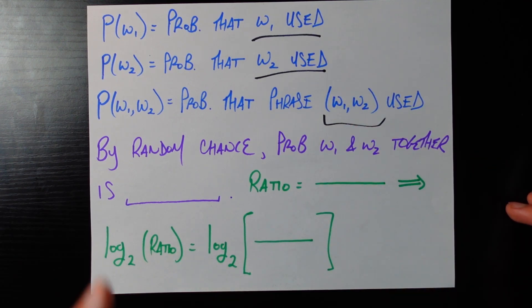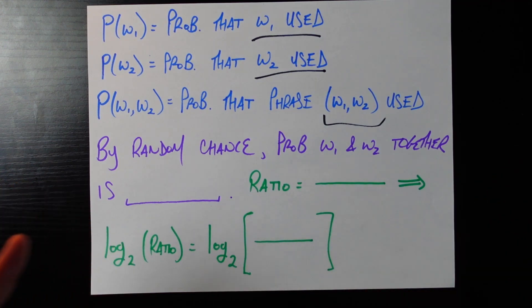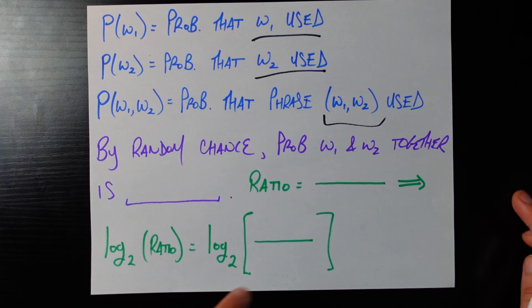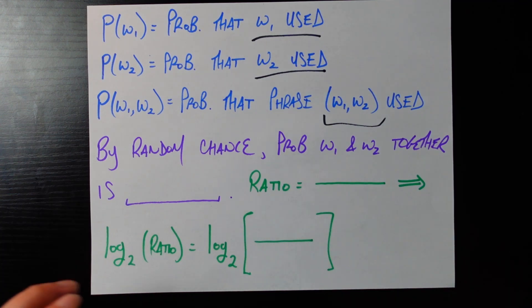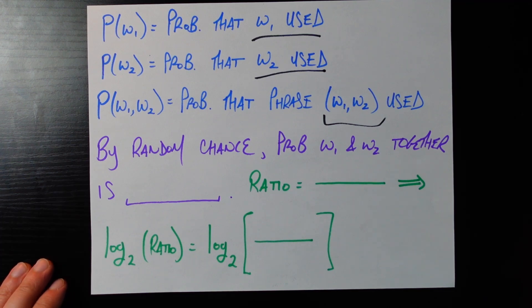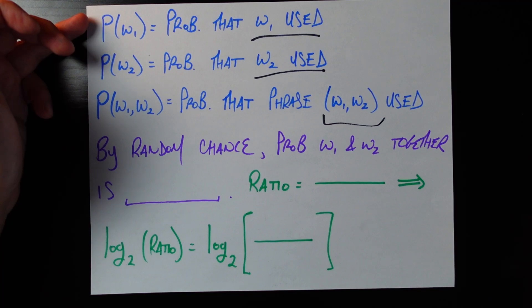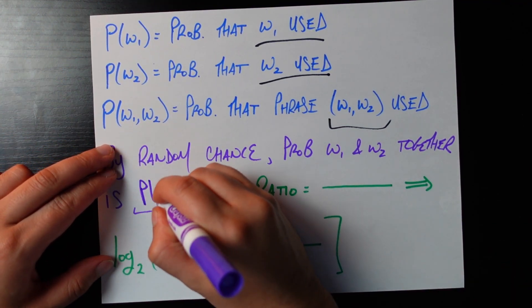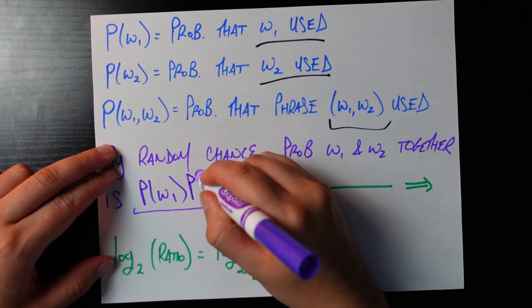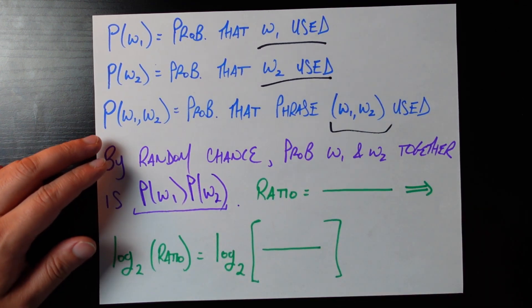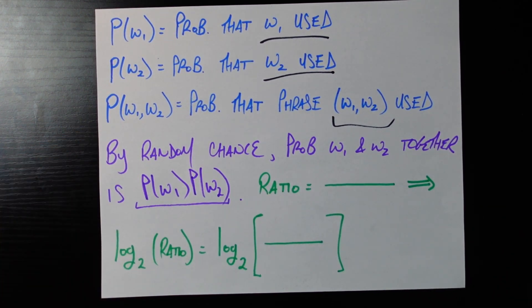Now by random chance what's the probability that in this massive piece of text or in all these books we're using what's the probability we would see w1 and w2 together by random chance. By random chance purely or in other words if we didn't have any reason to believe that w1 w2 was a phrase of any kind the probability we would observe them together in a bigram is simply just going to be p w1 times p w2 because that's exactly the assumption we make in probability when we assume two things are independent. We can just multiply their probabilities together.